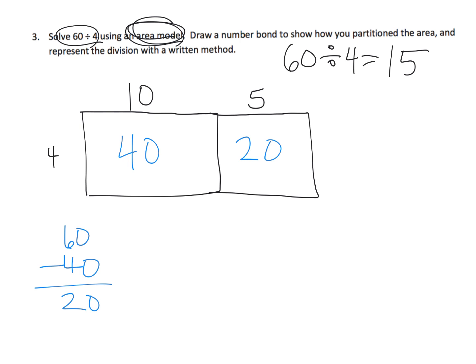What would that look like using the number bond? Well, we'd say 60 is broken up into 40 and 20. And then in both cases, 40 divided by 4 is 10, 20 divided by 4 is 5. So 40 divided by 4 is 10, and 20 divided by 4 is 5. And those two numbers added together give us 15.